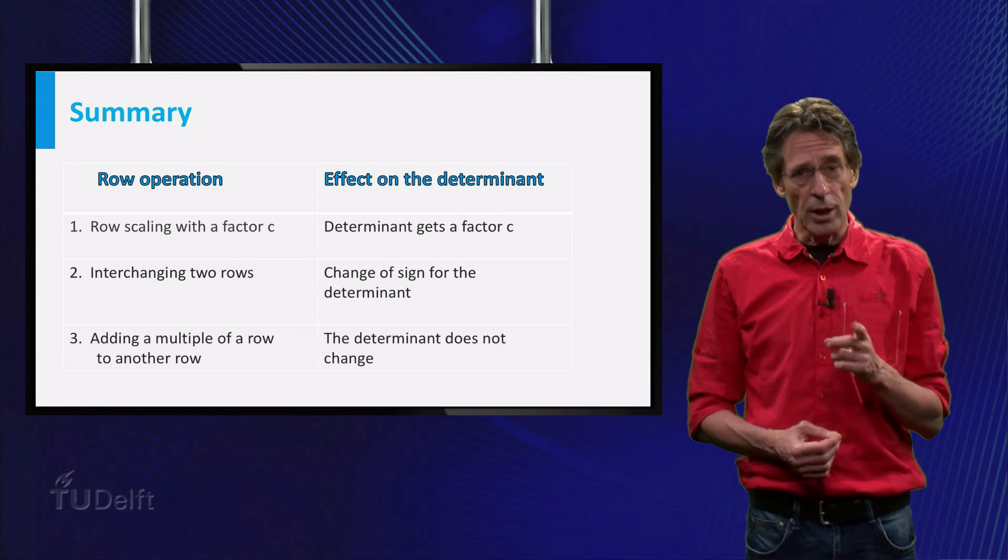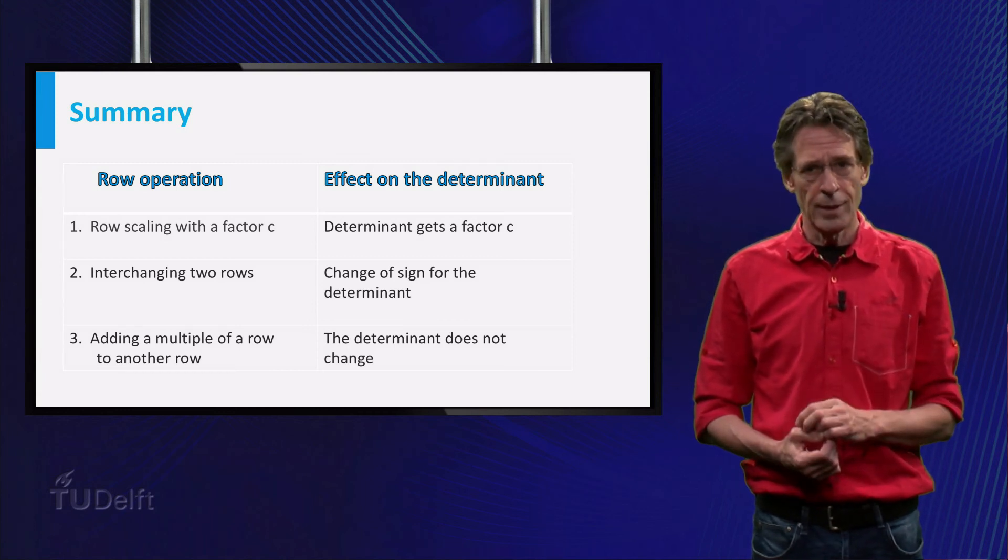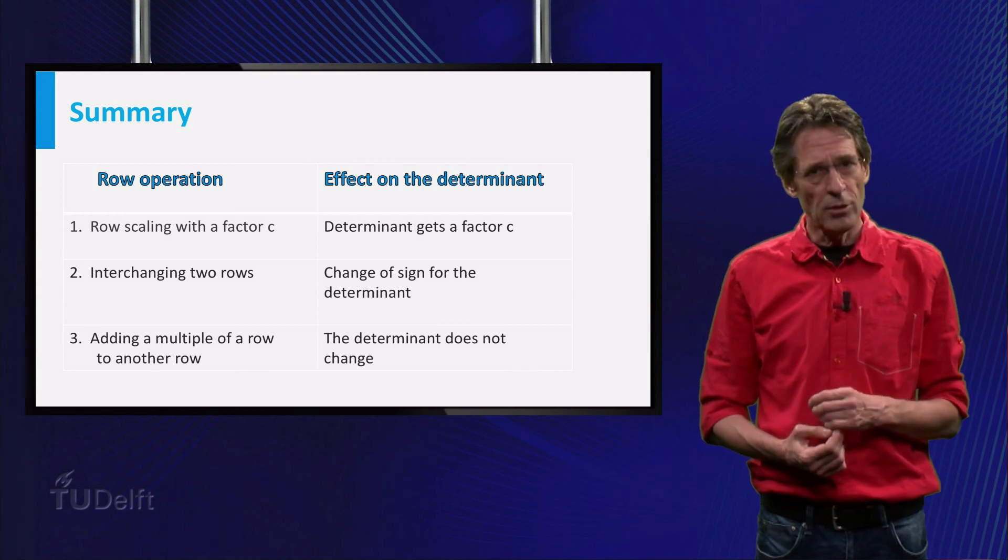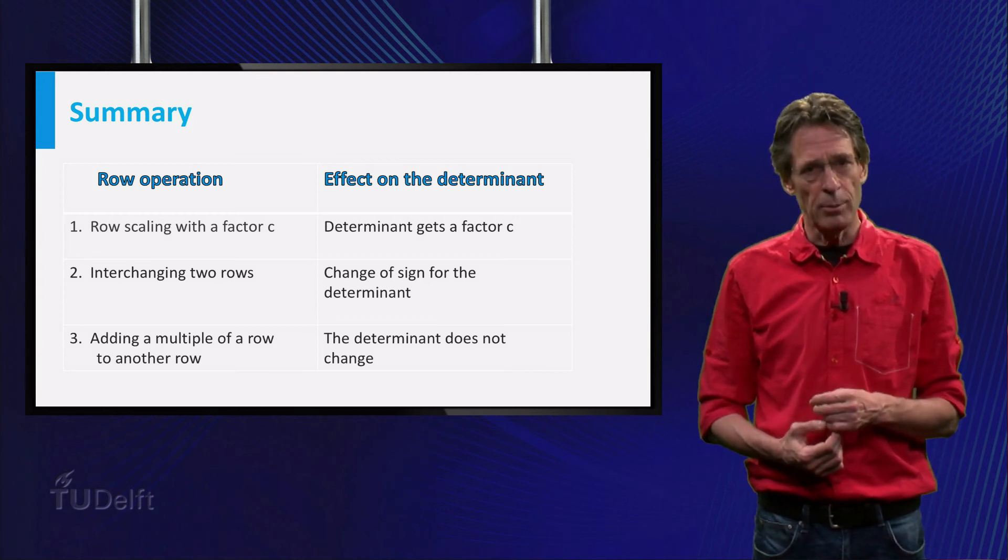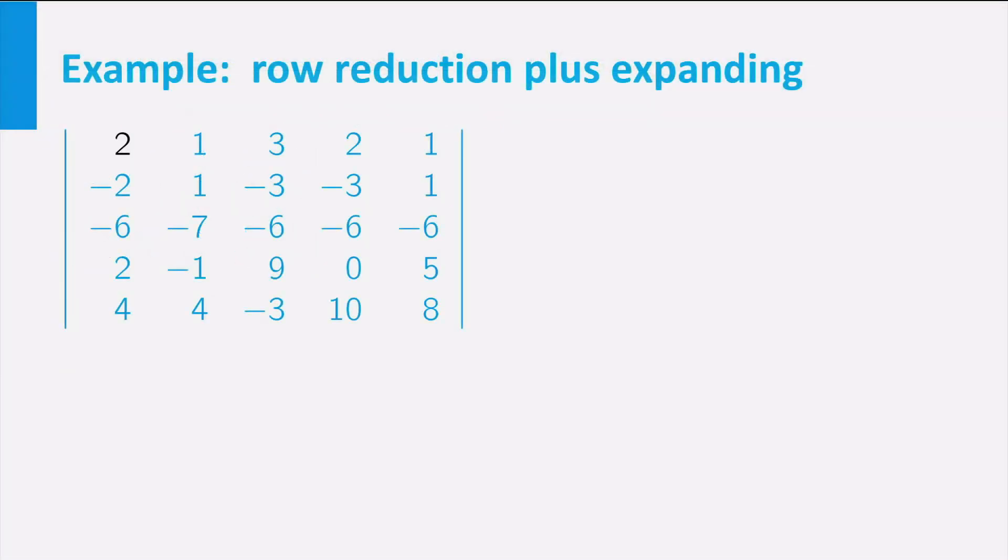Remember I promised I would give an efficient way to compute the value of a determinant. Let me show you how these three rules can indeed be of help. Take the example on the slide. Using the first row, we can create zeros in the first column, namely add the first row to the second row, add the first row three times to the third row, and so on, as indicated on the slide.